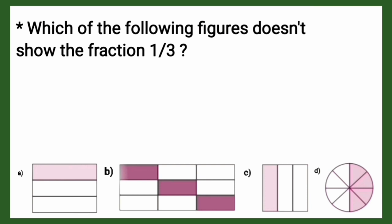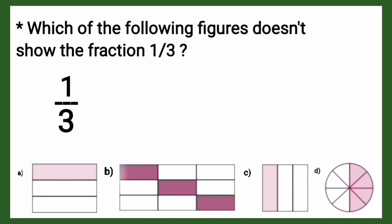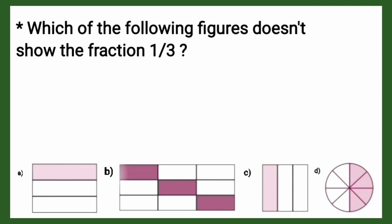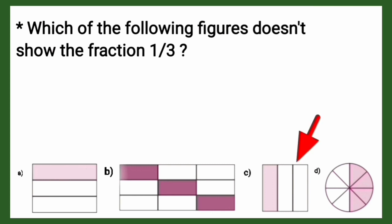We'll start from option A. As we can see, there are three parts and one part is shaded, so the fraction is 1/3. In option B, again we have the fraction 1/3 because out of nine parts, three parts are shaded, which gives 1/3. In option C, again we have the fraction 1/3.